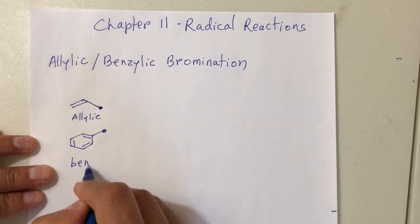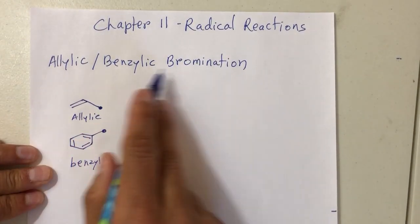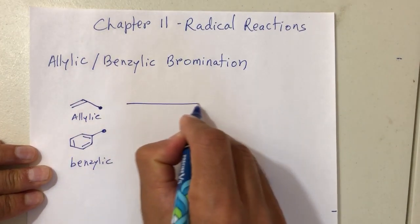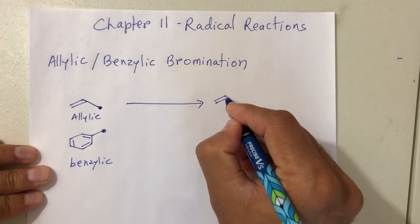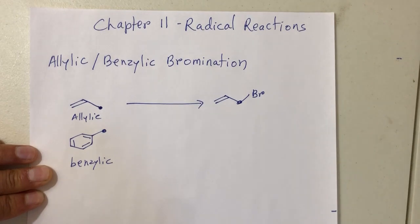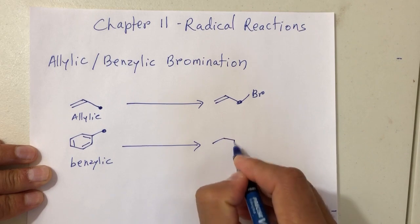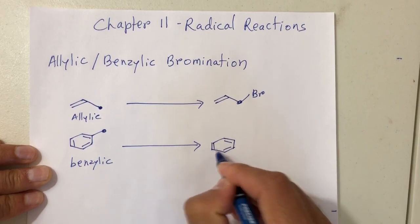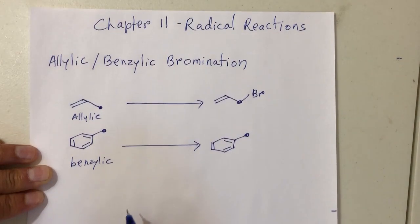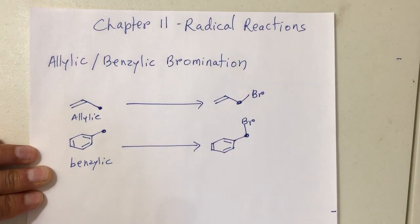The name itself says we are trying to put a bromine on those two carbons. So if I put a bromine on that allylic carbon, that's how it will look. Same is true for the benzylic case — the first carbon attached to the aromatic ring is the benzylic carbon, and we're trying to put a bromine on that carbon.